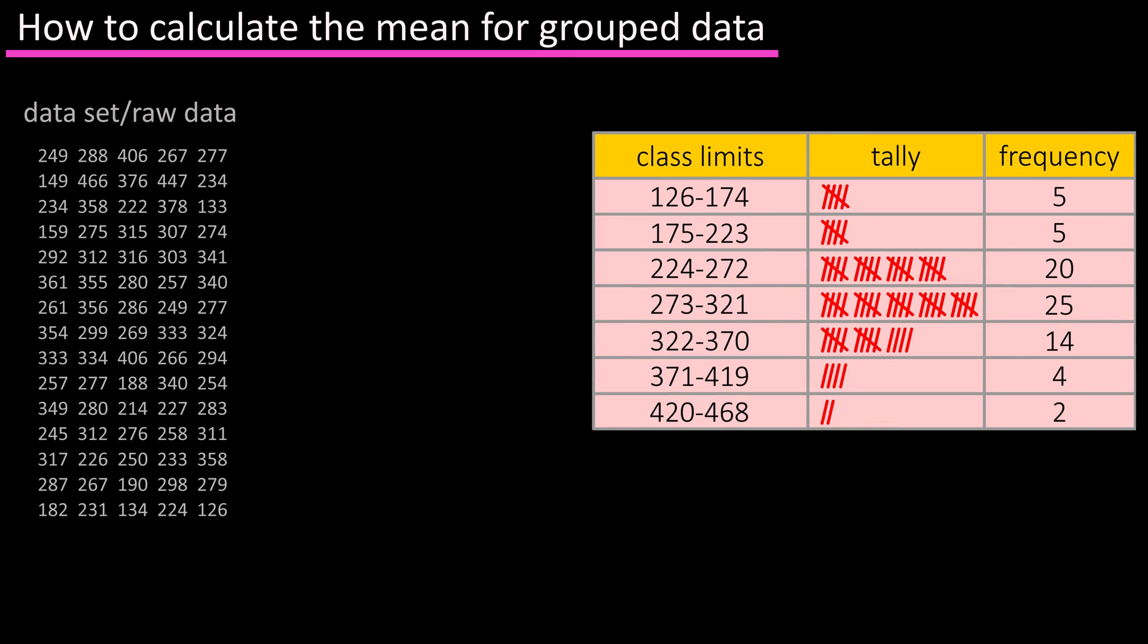Real quick, you have a data set, you break the data down into classes or intervals, you tally up how many data points are in each class, and you write that number down, which is the frequency.